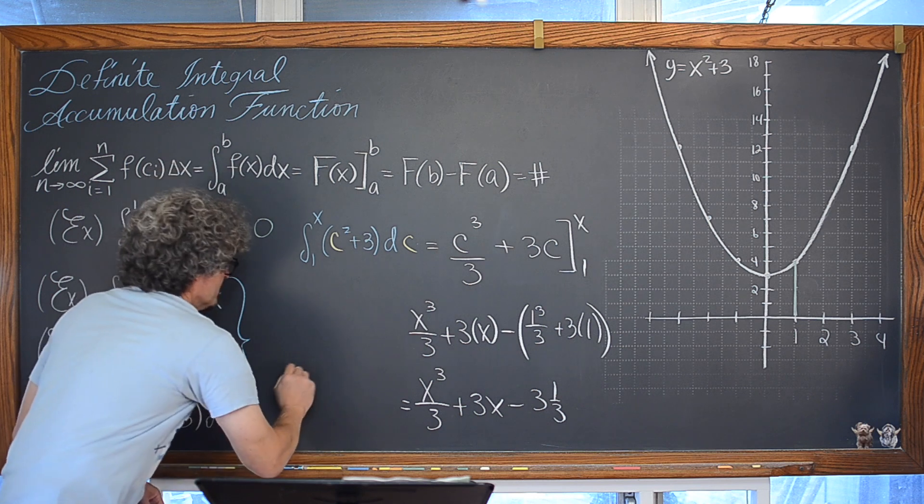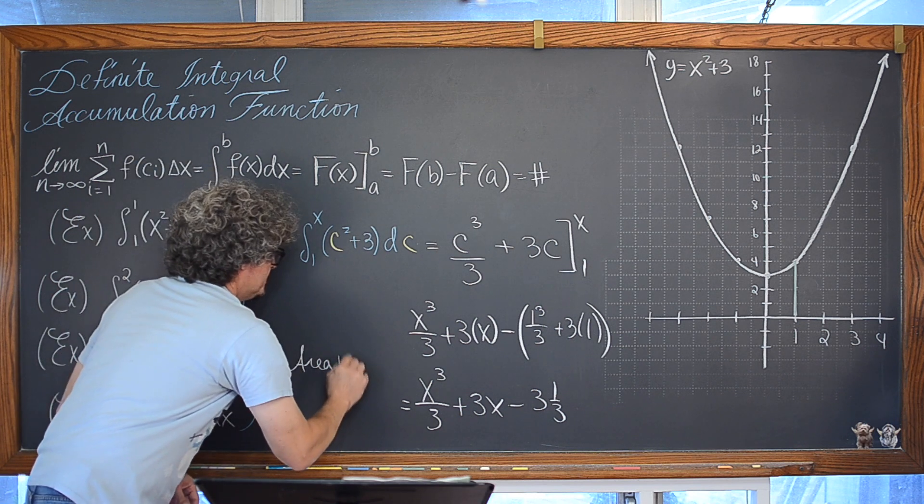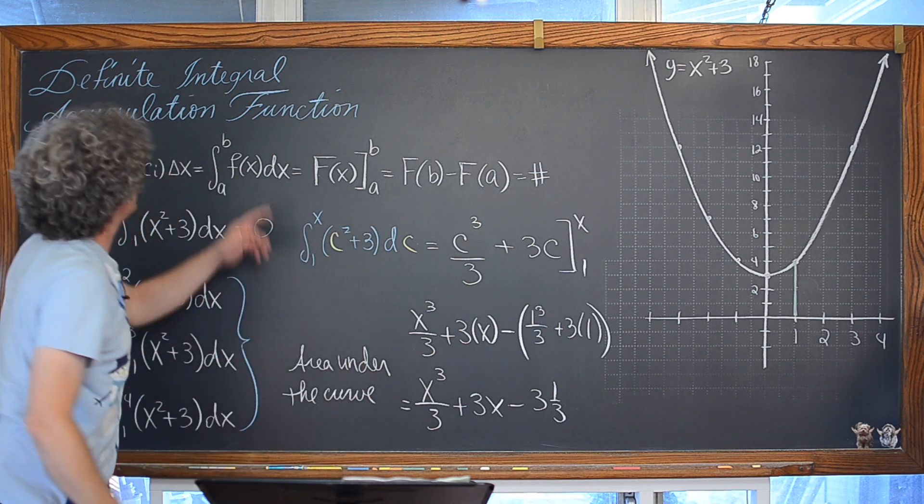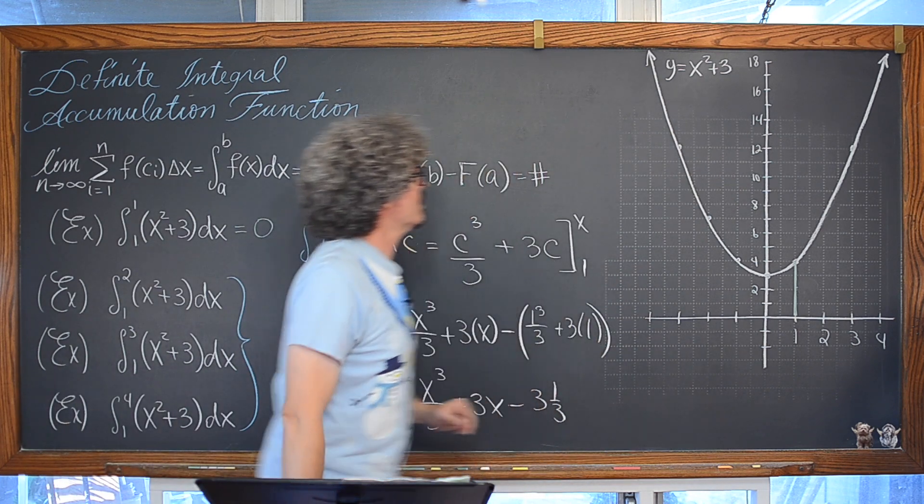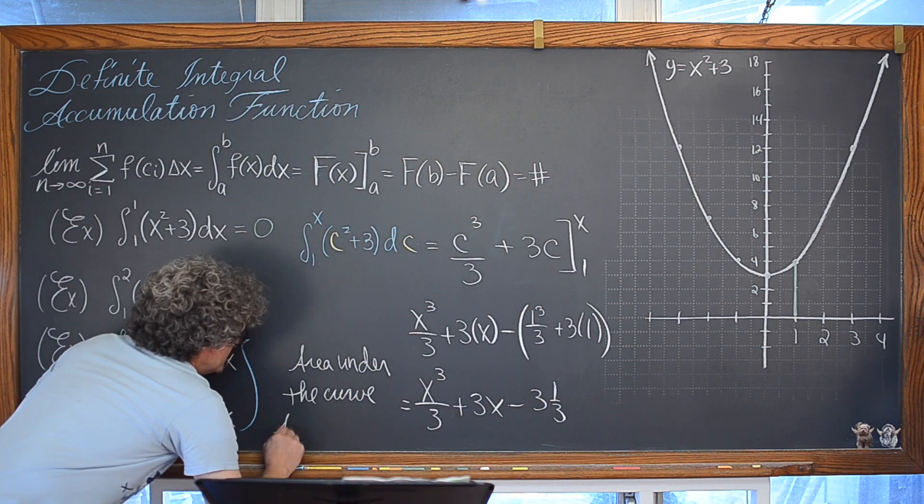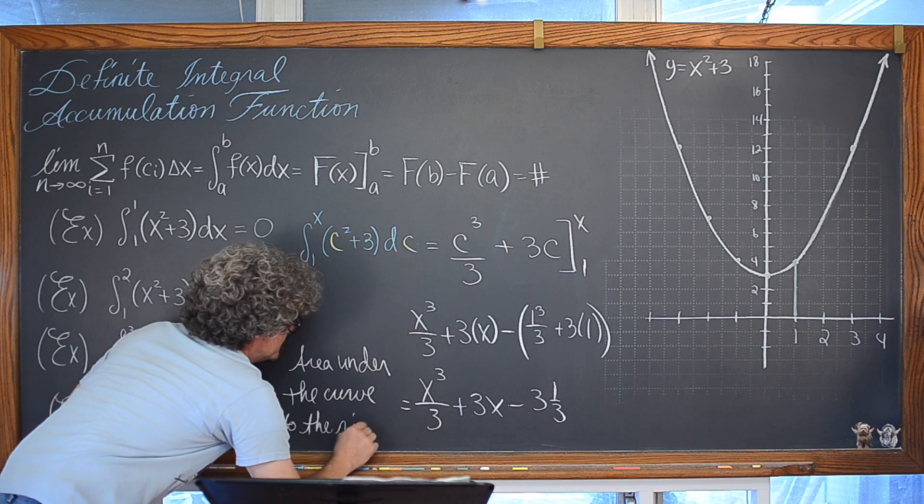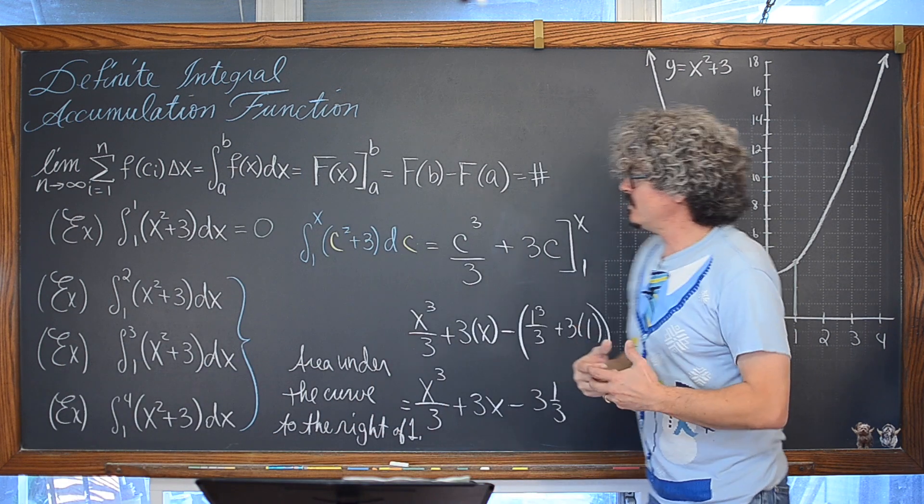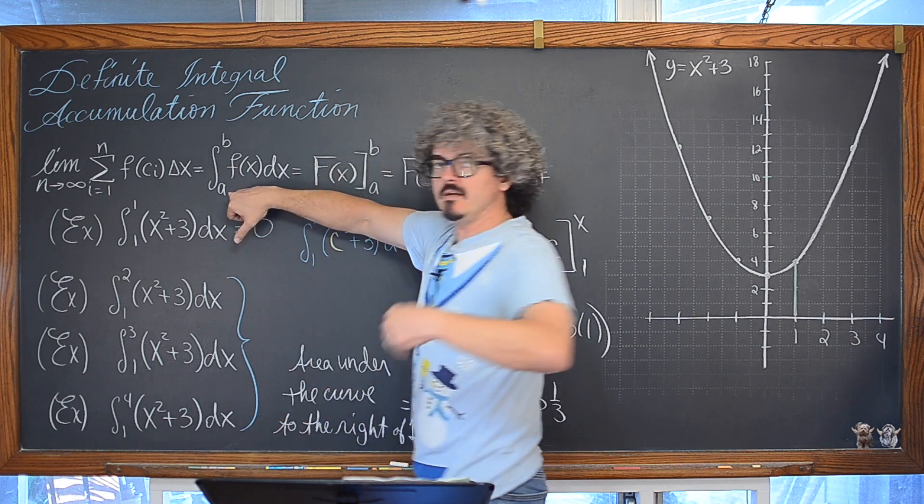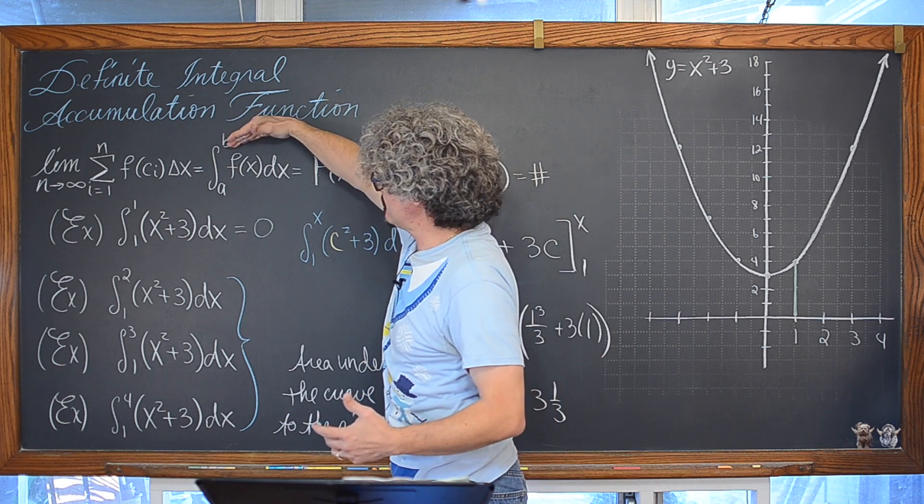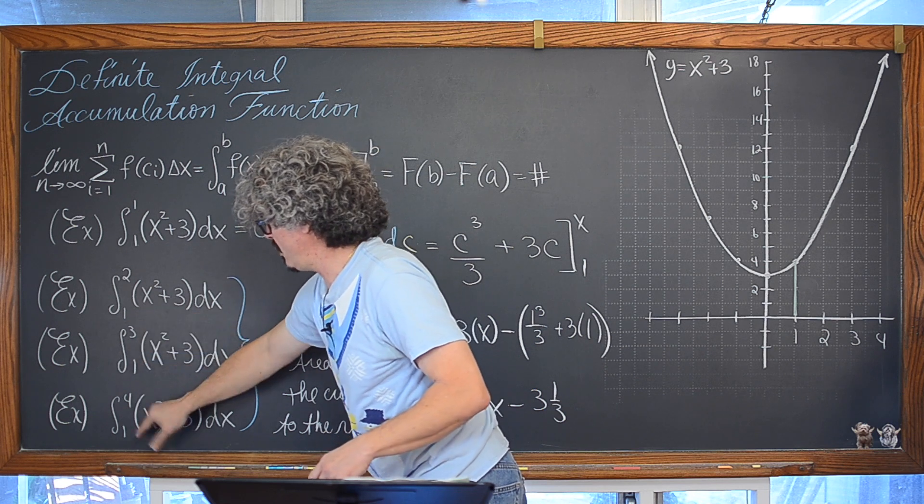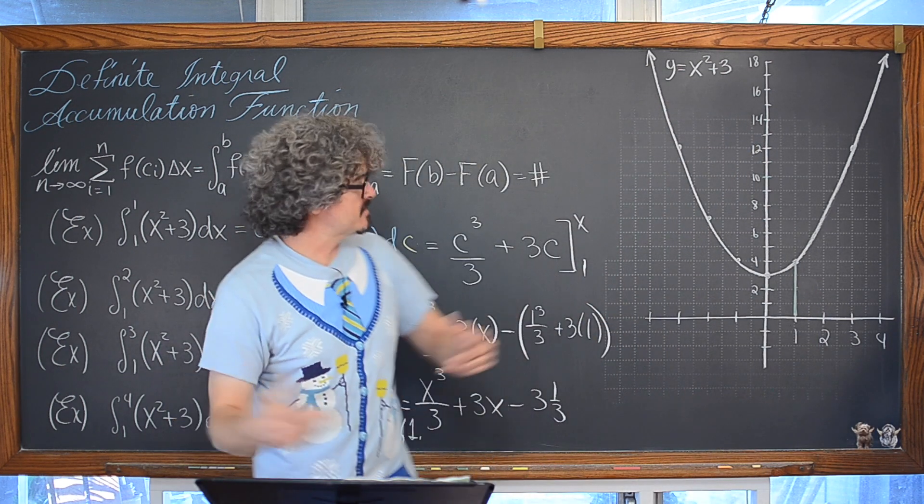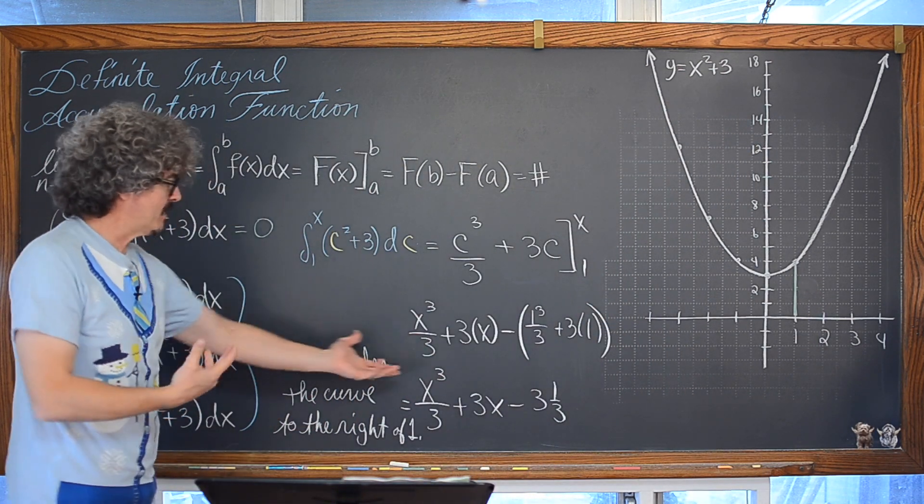Now, what this is going to tell us is the area under the curve, the curve being y is equal to x squared plus 3, to the right of 1. Because remember, we need to have this be our lower limit. And as we move, you know, so as we have that lower limit of 1, as we move to the right, those upper limit values are going to maintain that idea of being larger. And that is now, okay, so now how do we use this?